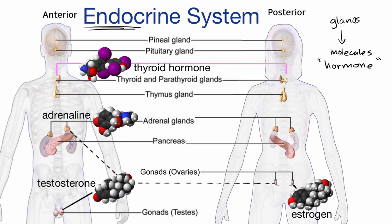Similarly, you have testosterone, which is associated with male function, but it also exists in females. It's primarily produced in men in the testes — thus the name testosterone — but it can also be produced by the adrenal glands.